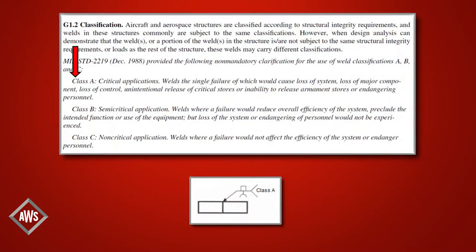According to Annex G, Class A is for critical applications. Class A classification is given to wells that would cause loss of the system, loss of major components, loss of control, unintentional release of critical stores, inability to release armament stores, or endangerment of personnel if they failed.